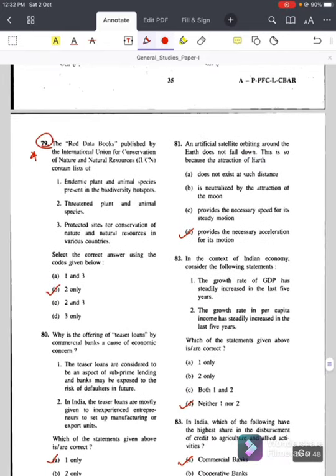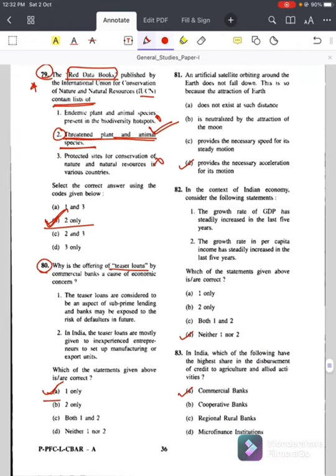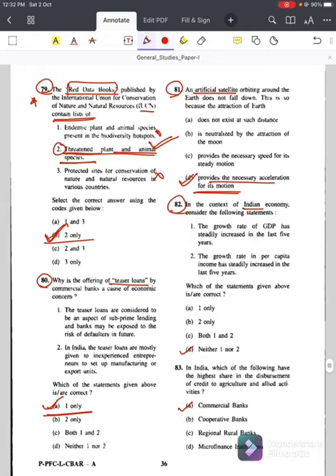Question number seventy-six, again here some people have given different answers. 2004 tsunami made people realize that mangroves can serve as a reliable safety hedge against coastal calamities. How do mangrove function as safety hedge? Answer is D, the mangrove trees do not get uprooted by storms and tides because of their extensive roots. Again question, Jain philosophy, answer is A, universal law, universal soul is Upanishads. Question number seventy-eight, salinization, answer is B, it makes soil impermeable. Question number seventy-nine, again this is very important we have to learn something from this question. Red Data Books published by IUCN contains list of, answer is B, two only, threatened plant and animal species. It does not contain endemic plant and animal species present in biodiversity hotspot protected sites for conservation of nature. It covers only threatened plant and animal species. Answer is B.